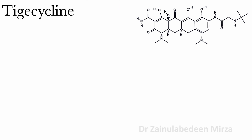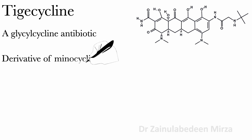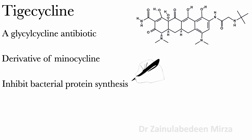Tigacycline is a glycylcycline antibiotic that is a derivative of minocycline. Tigacycline inhibits bacterial protein synthesis by binding to the 30S ribosomal subunit, and Tigacycline is a bacteriostatic.